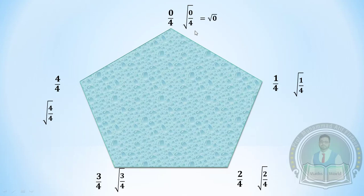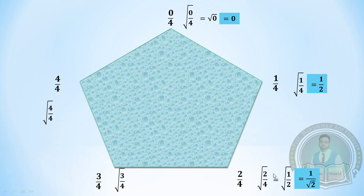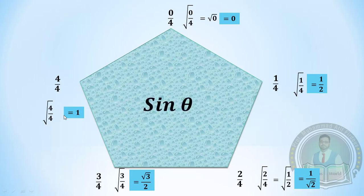Simplifying: √(0/4) = 0, √(1/4) = 1/2, √(2/4) = 1/√2, √(3/4) = √3/2, and √(4/4) = 1. These give us the values of sine theta at 0°, 30°, 45°, 60°, and 90°.